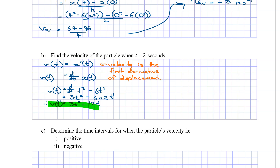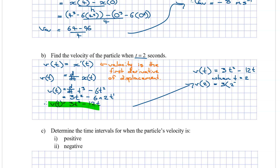Now that we have the velocity function v(t) = 3t² minus 12t, we need to evaluate it at t equals 2. Substituting: 3 times 2² minus 12 times 2 equals 3 times 4 minus 12 times 2, which is 12 minus 24, giving minus 12. So the velocity at t equals 2 seconds is minus 12 meters per second.